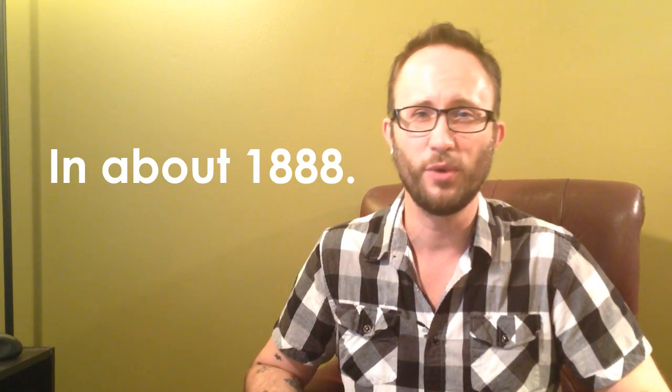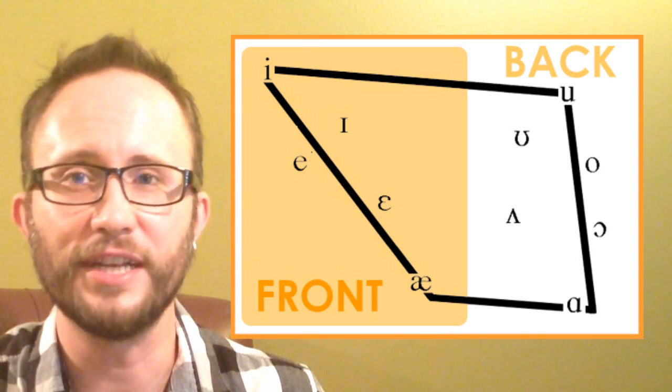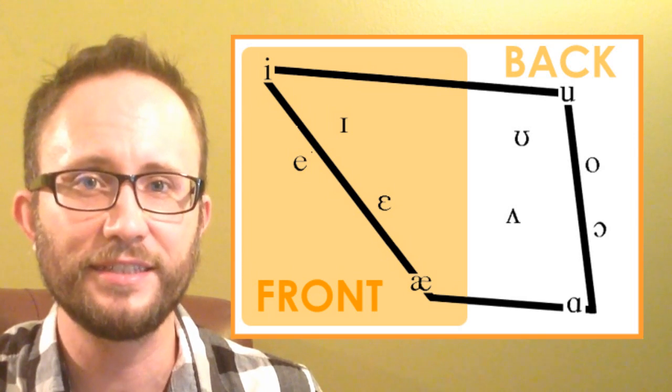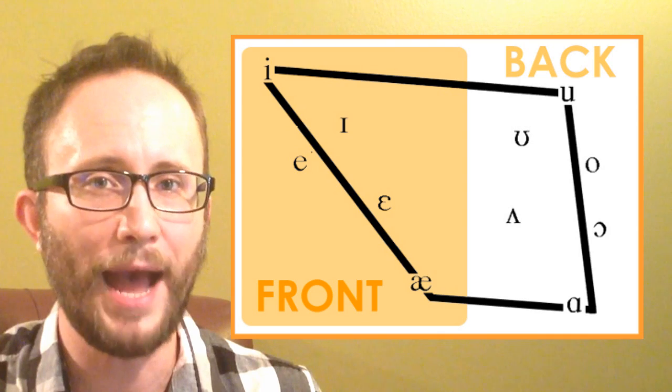Just a note on these descriptions — they worked for the people who came up with the IPA chart 150 to 200 years ago. Whether or not you feel like these vowels feel more front or more back, if you don't feel it, then you don't feel it — some people do, some people don't. The front vowels are vowels like fleece, kit, face, dress, and trap.